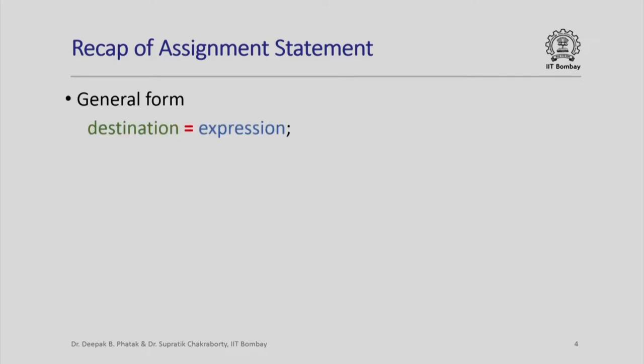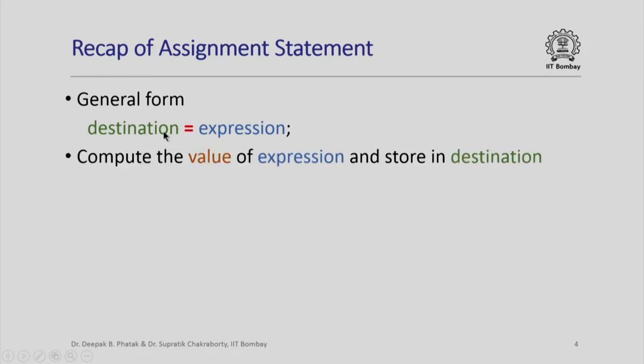Let us quickly recap the assignment statement we have seen earlier. The general form of the statement is: we have a destination, then the equal sign, and then the expression. This is to be read as: the value of the expression is assigned to the destination. The expression has to be evaluated to a value and stored in the destination, and since every value must have a type, the expression must also have a type.